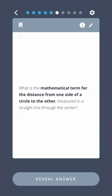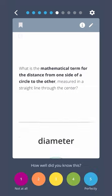What is the mathematical term for the distance from one side of a circle to the other measured in a straight line through the center? Diameter.